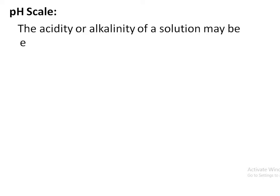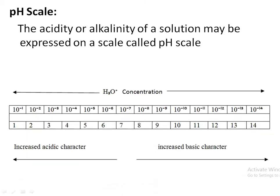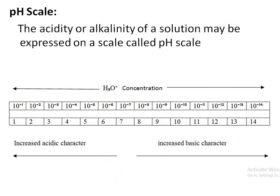The acidity or alkalinity of a solution may be expressed on a scale called the pH scale. Looking at the image, there are two things: one is the pH range from 1 to 14, and the other row represents the hydronium ion concentration. The hydronium ion concentration varies from 10 raised to power minus 1 to 10 raised to power minus 14.